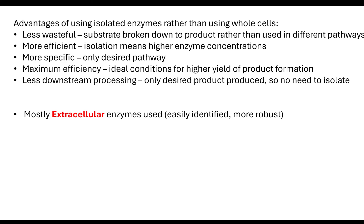The enzymes we tend to use are mostly extracellular enzymes — those produced in the rough endoplasmic reticulum, through the Golgi apparatus, to the cell plasma membrane where they are released by exocytosis. Why do we use them? Because they're easily identifiable and more robust. These microorganisms release enzymes out into the environment to digest waste material, and then the organism absorbs the smaller molecules for its own use. The fact that they are easily identifiable and more robust means we tend to use extracellular enzymes for our immobilized enzyme applications.